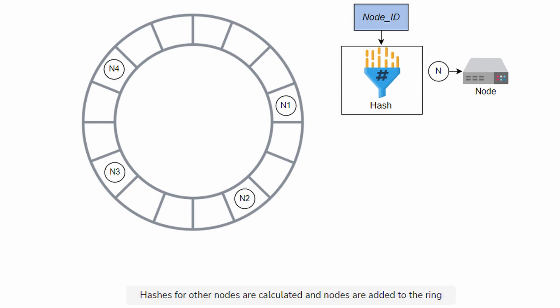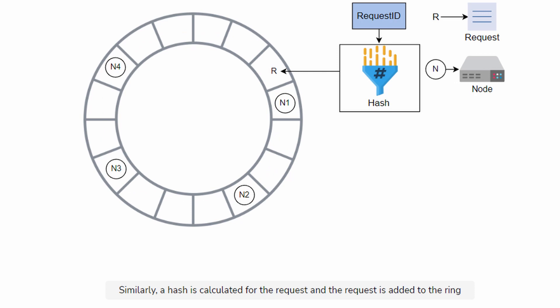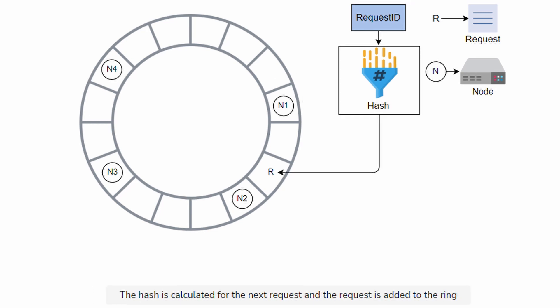The reason we do this is so we can assign a range of values that each host will own. Specifically, each host will own all values up until the nearest clockwise neighbor. So when we need to look up which cache host stores a request key value, we take the hash and trace that value to the nearest host in the clockwise direction.